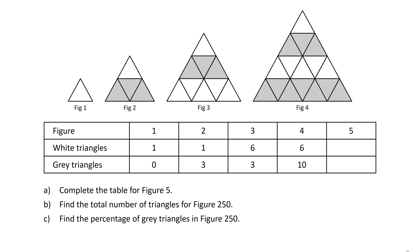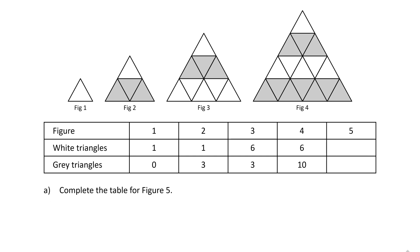So how can we solve this problem? It looks intimidating, but let's go through it step by step. Let's try to complete the table for figure 5. We need to calculate the number of white triangles and gray triangles. We could just draw out this figure, but let's look for a pattern. Going from figure 1 to figure 2, notice the number of white triangles is the same.